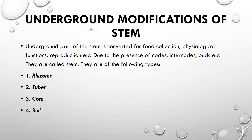Underground modifications of the stem: sometimes the stem is modified to store food material underground. The underground part of the stem is converted for collection of food, physiological functions, reproduction, etc. Due to the presence of nodes, internodes, and buds, they are still called stems. The underground part, although below ground, has nodes, internodes, and buds, and is swollen to store food material. The types are: rhizome, tuber, corm, and bulb.